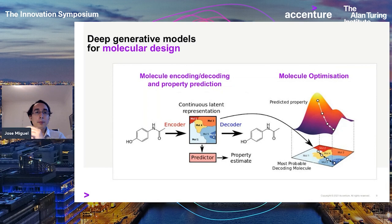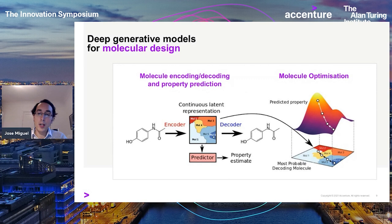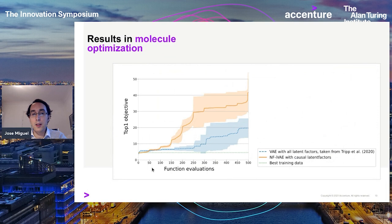Another application is molecular design. We apply deep generative models to discover improved molecules, mapping molecules to a continuous low-dimensional latent space and using a predictor for molecular properties. We then do molecular optimization by taking steps in the latent space in directions that improve properties. Using identifiable VAEs and causal latent variables for optimization, our method performs much better over 500 new molecule evaluations.